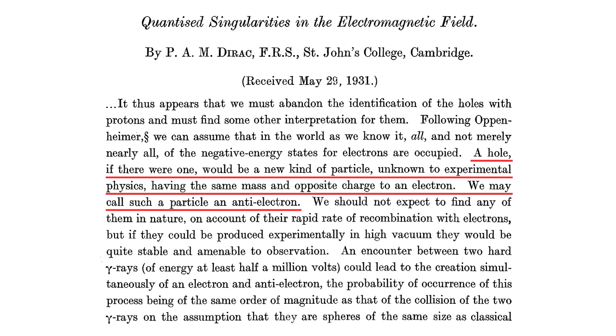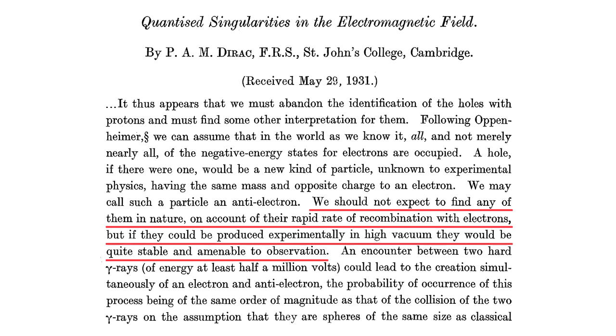There was no experimental evidence for the existence of such a bizarre thing. This was motivated solely, one might say, by Dirac wanting to fix a seeming shortcoming of his equation. He continued, we should not expect to find any of them in nature on account of their rapid rate of recombination with electrons. But if they could be produced experimentally in high vacuum, they would be quite stable and amenable to observation.